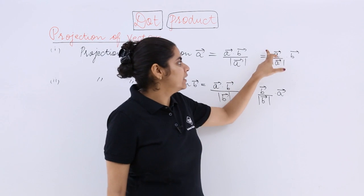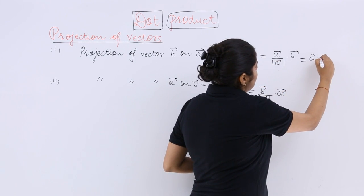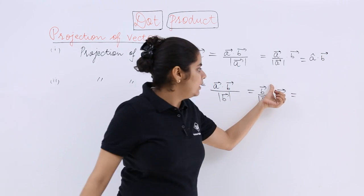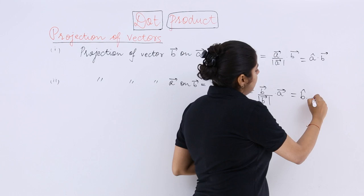Now you tell me the answer. This is vector upon its magnitude which is a unit vector, so this is A cap multiplied by B vector. B vector upon its magnitude is B cap multiplied by A vector.